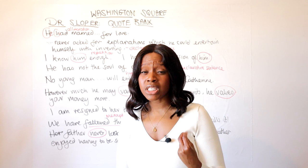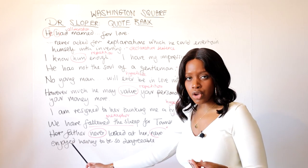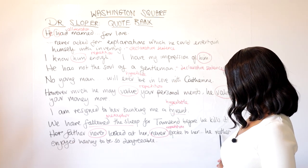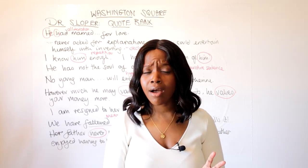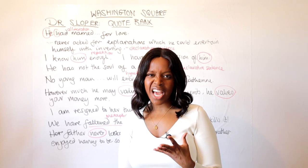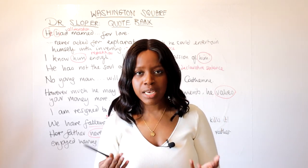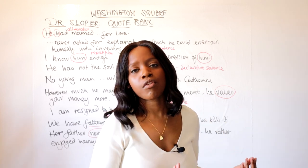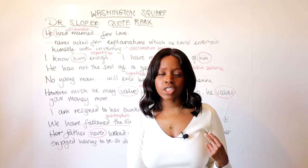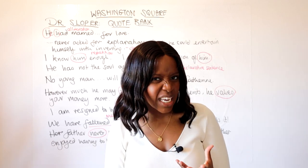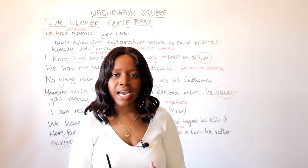The final quotation illustrating Dr. Sloper's spite: 'her father never looked at her, never spoke to her — he rather enjoyed having to be so disagreeable.' He gives Katherine the silent treatment, punishing her for a natural feeling — falling in love. The repetition of 'never' underlines his cruelty, and 'rather enjoyed' shows he takes a perverse pleasure in causing Katherine pain, confirming him as a deeply antagonistic character.